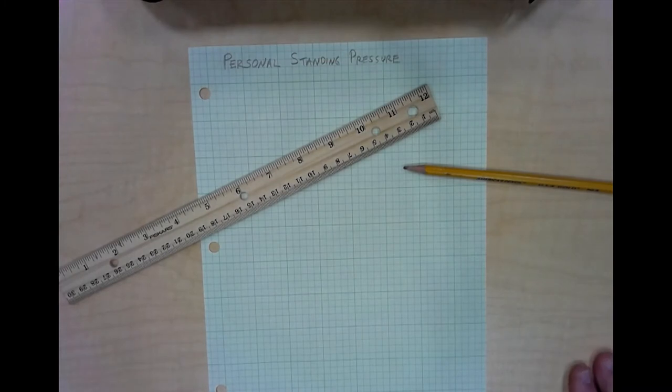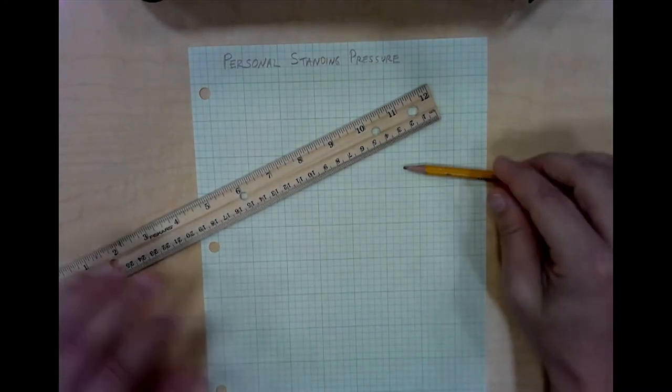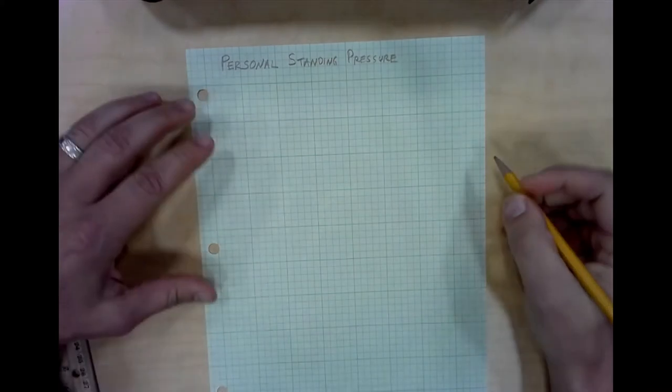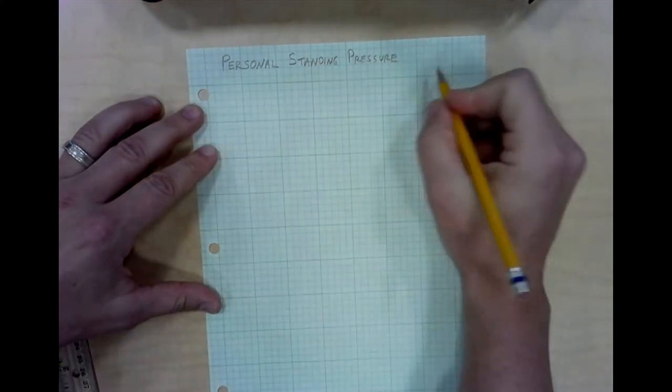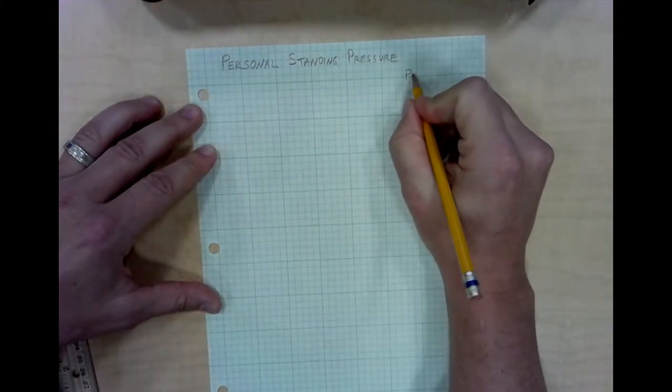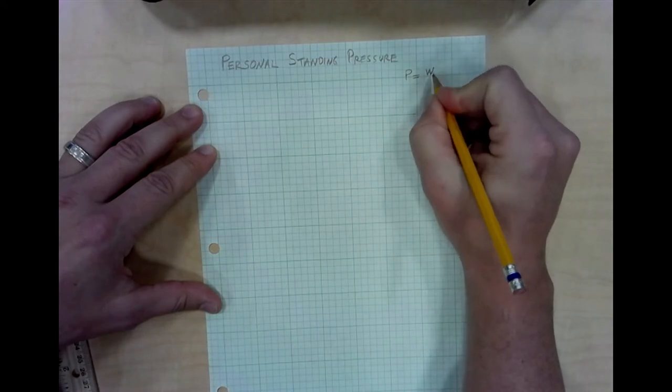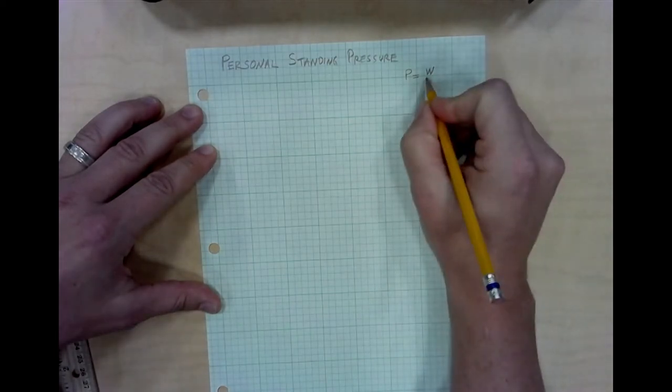We're going to start here by talking about exactly what pressure is. If we want to calculate the pressure we're going to need to know two pieces of information. To calculate the pressure we're going to need to know a weight and an area.